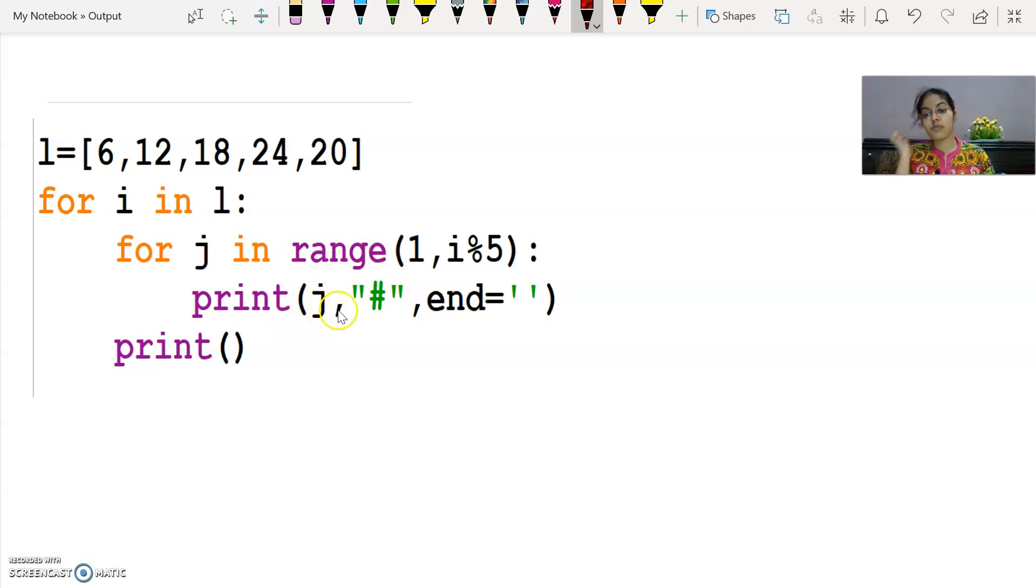After that, you have to print the value of j variable. Then comma is there, that means along with it what will come? Hash symbol. And end equals to empty string. This means that whatever next value is, it will come without a line break, without space. So let's execute this now.